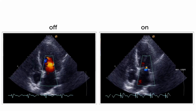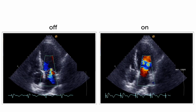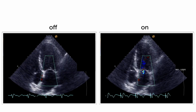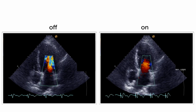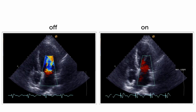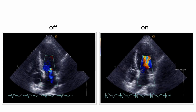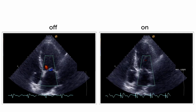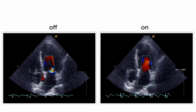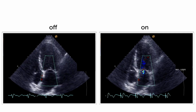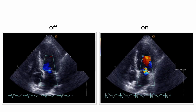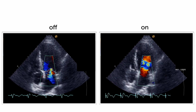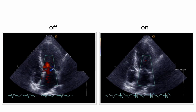Here is the same patient again. Now we're using mitral regurgitation as a parameter to check whether or not he benefited or not. On the left hand side, you see that MR is a little bit more than it is when you turn the CRT system on — another indication that he will definitely benefit from the CRT therapy.